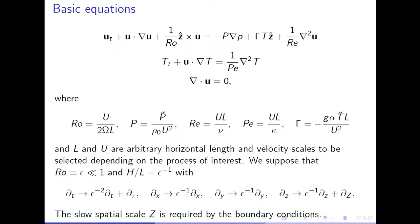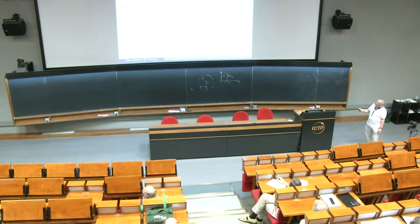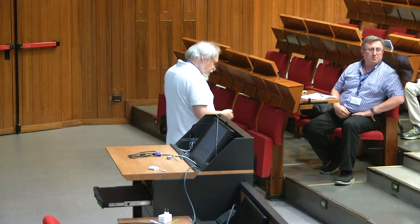I'm also interested in situations where viscosity is not so important, so this 1 over Reynolds number term is going to be small. Likewise, thermal diffusion is going to be a small term. This is a numerical problem because I need to solve equations with very small and very large coefficients, requiring tremendous spatial resolution and tracking of fast inertial waves, but I'm not interested in inertial waves — I want to know what happens over longer time scales. So I want to get rid of these awkward parameters through an asymptotic expansion that simplifies the equations of motion.